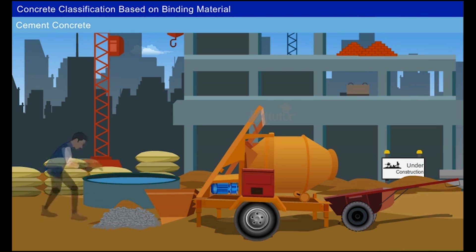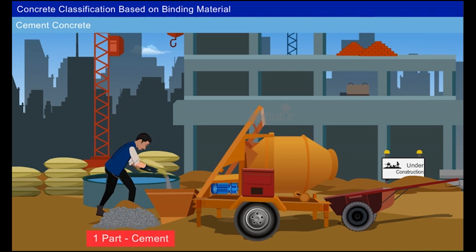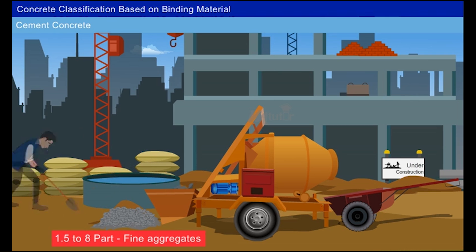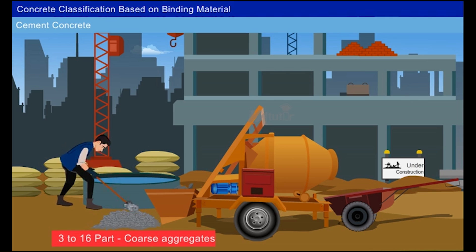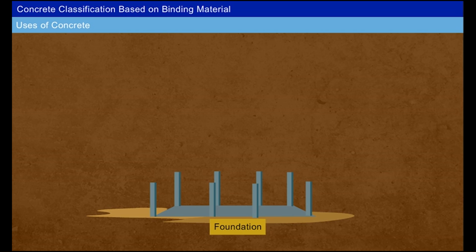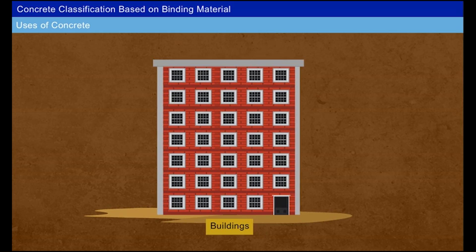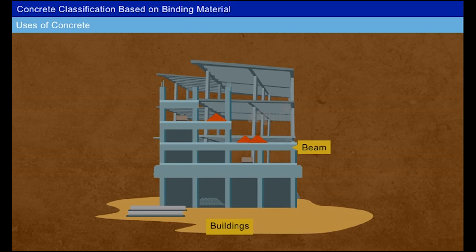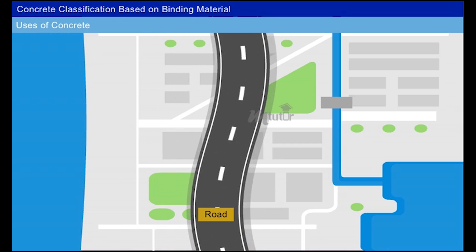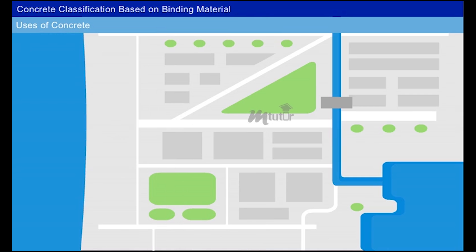Cement concrete is usually mixed in the proportion of one part cement, 1.5 to 8 parts fine aggregates, and 3 to 16 parts coarse aggregates. It is used for the construction of foundations and building elements such as beams, columns, and slabs, as well as for road pavement works.